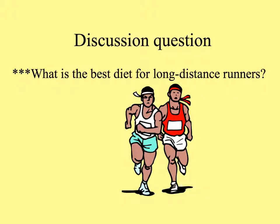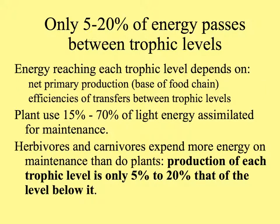Remember the birthday cake setup of the energy and biomass pyramids. This is because only 5% to 20% of energy passes from one trophic level to the next up. This depends on net primary production at the base of the food chain by the photosynthetic organisms, and the efficiencies of transfer between trophic levels. Of the light energy assimilated by plants, they use from 15% to 70% for maintenance, and they only grow using about 10% to 20%.